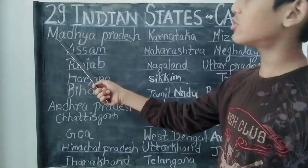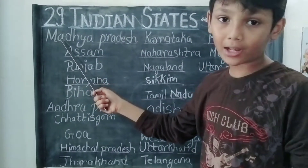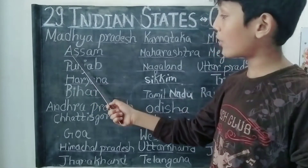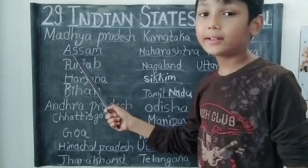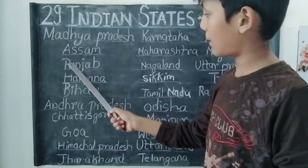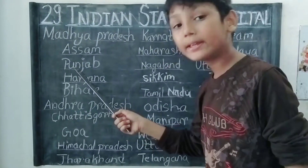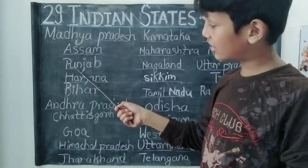The capital of Padra Pradesh is Bhopal. The capital of Assam is Dispur. The capital of Punjab is Chandigarh.